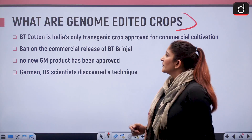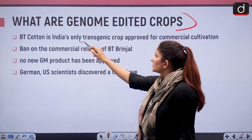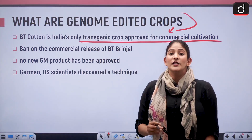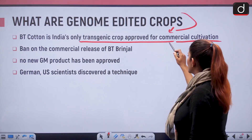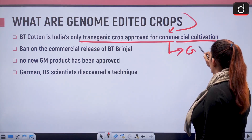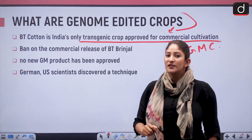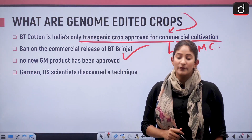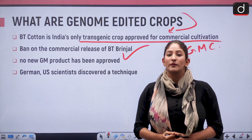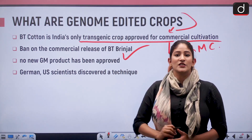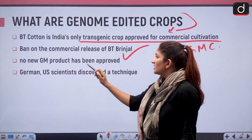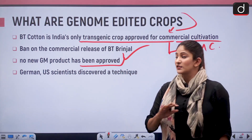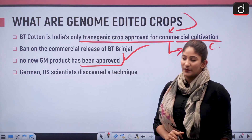In India, BT cotton is the only transgenic crop approved for commercial cultivation. More than that, we have to know this is a GM crop — genetically modified crop. GM mustard has not been released. For India, it is just BT cotton. Since the new government came into being, no new GM product has been approved.